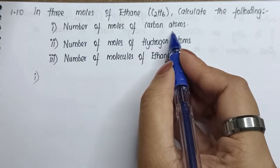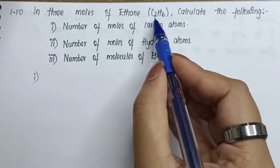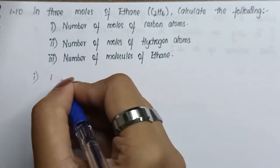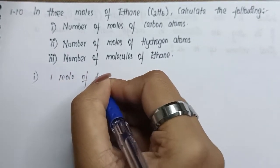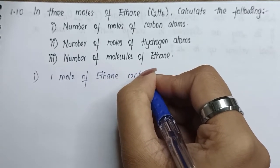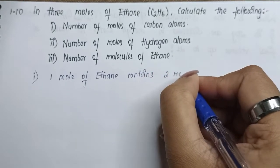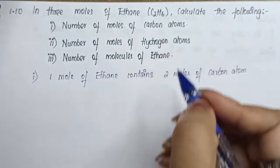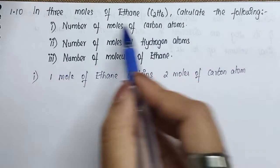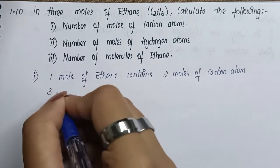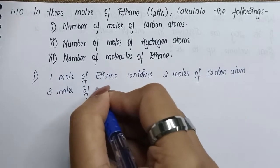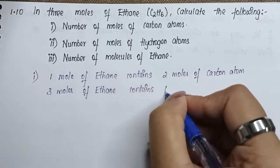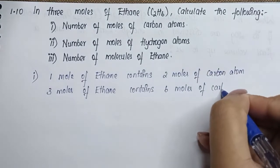For the first one, it clearly asks for the number of moles of carbon atom. As per the formula, one mole of ethane contains two moles of carbon atom. So we need to find the number of moles of carbon atom in three moles of ethane. We just cross multiply, and three moles of ethane contains six moles of carbon.